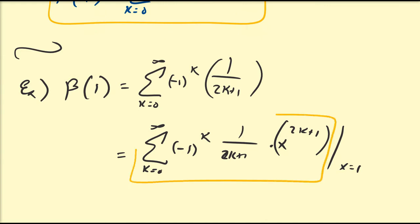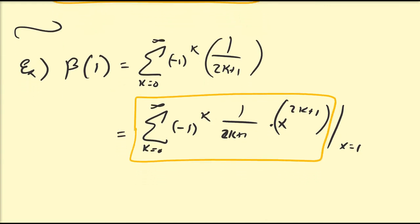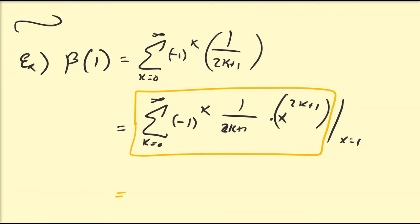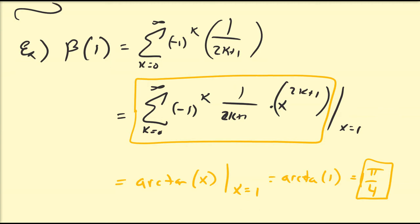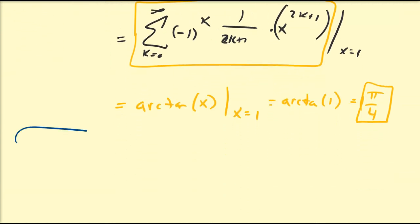This expression is precisely equal to the Taylor series of the arctangent function. So this is the arctangent function evaluated at x equals 1, which is just equal to the arctangent of 1, which as we know is equal to pi over 4. So the Dirichlet beta function evaluated at 1 is pi over 4, which is a constant often seen throughout mathematics.